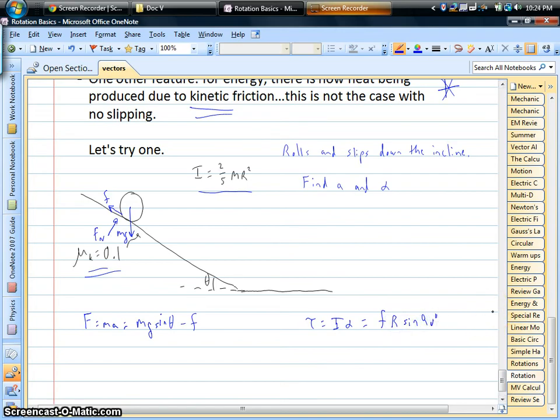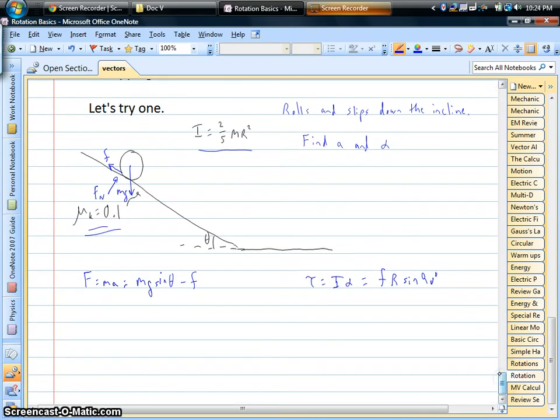So the setup, look at this, the setup is exactly the same as if there were no slipping. Now the thing is, we have to solve these independently, because we no longer have this connection between A and alpha.